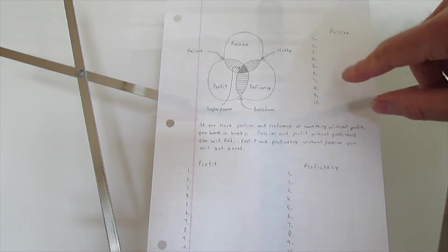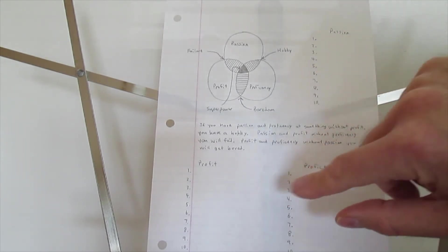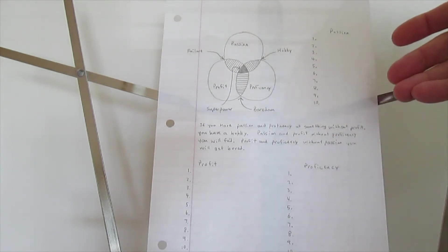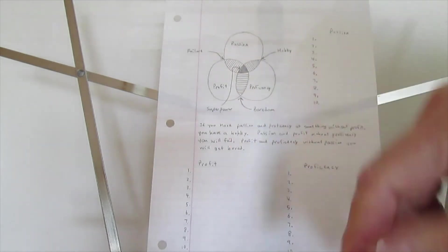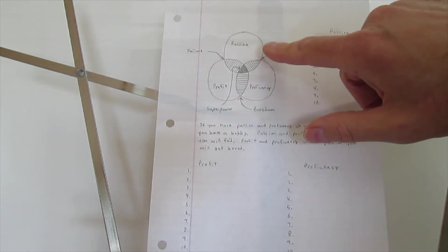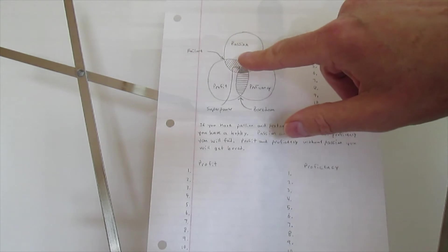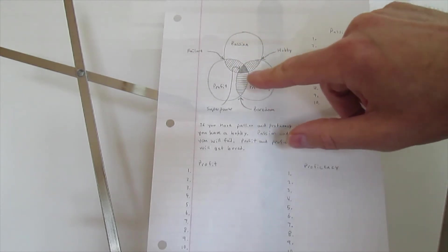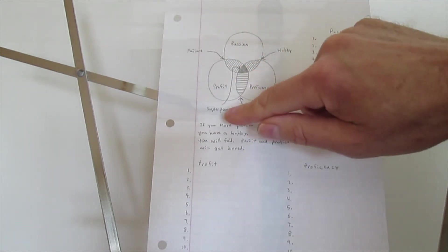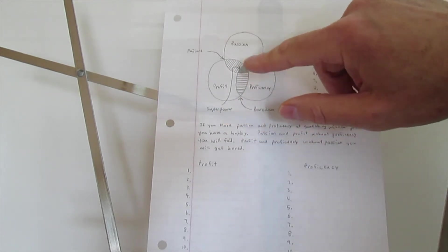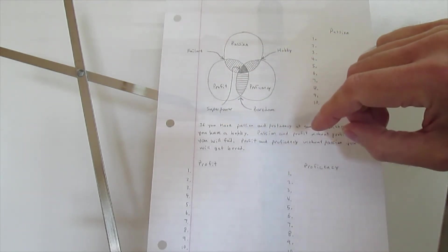Are there any that are in all three categories? Let me use an example of photography. I'm passionate about it, I'm good at it, and I can make money doing it. So here your passion, proficiency, and profit all overlap in the middle. That is your superpower. It falls in all three categories.